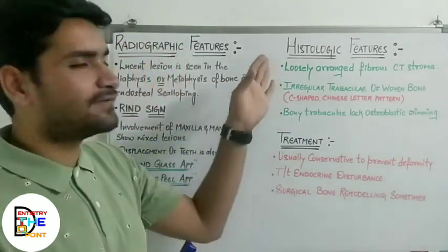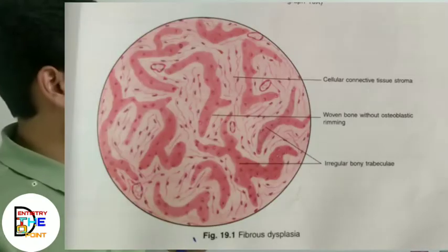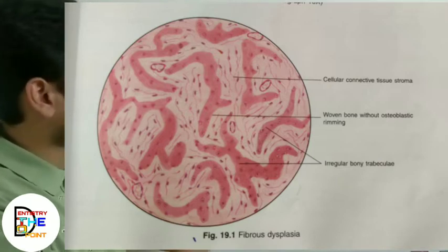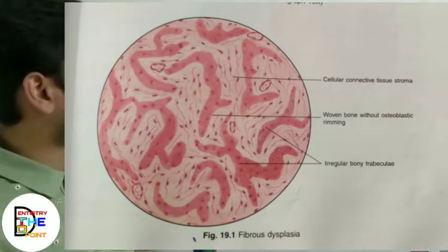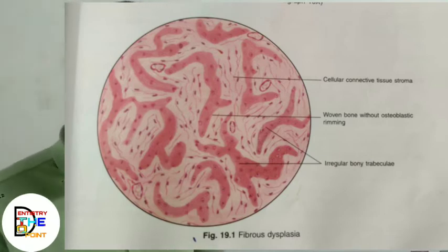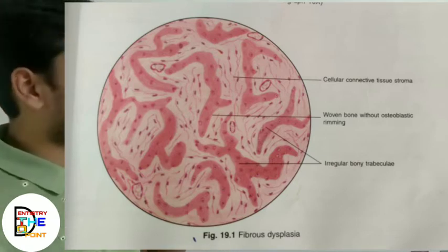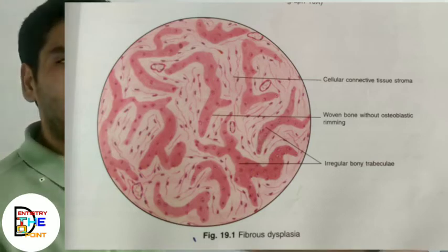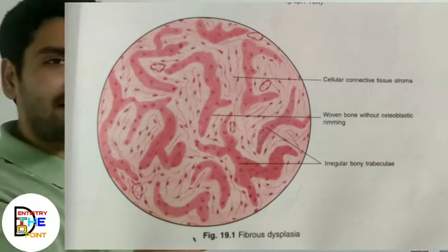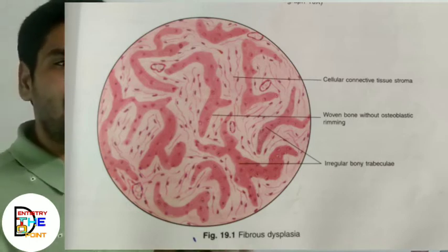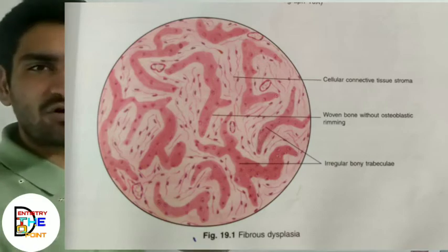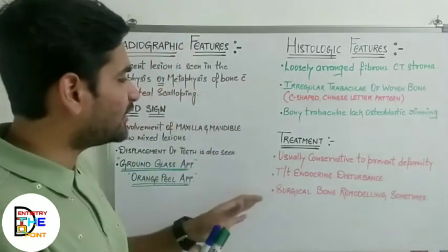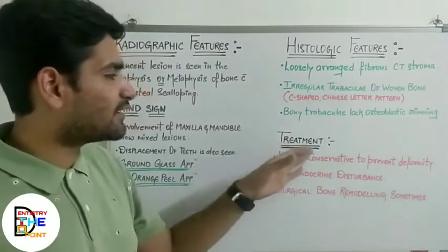The histological features are: first, loosely arranged fibrous connective tissue stroma. Second, the connective tissue stroma is loosely arranged and contains irregular trabeculae of woven bone — the trabeculae present are irregular, described as C-shaped or Chinese letter pattern. Third and lastly, the bony trabeculae lack osteoblastic rimming — in normal cases the bony trabeculae are rimmed by osteoblasts, but in fibrous dysplasia they lack this osteoblastic rimming. These are the three main histological features.